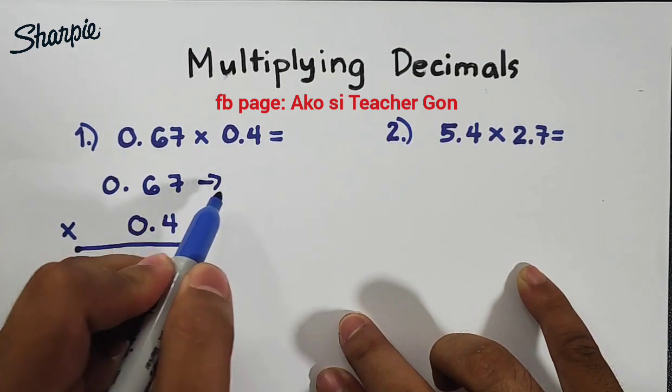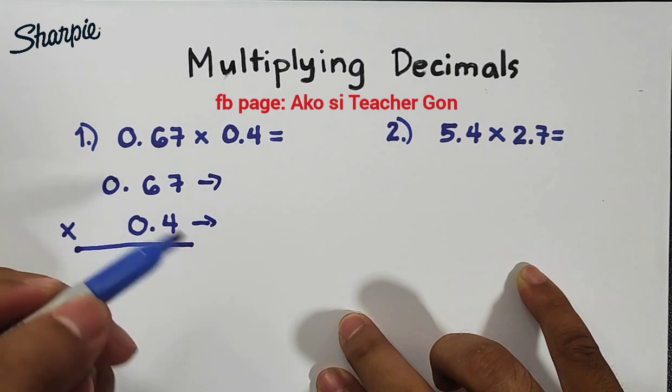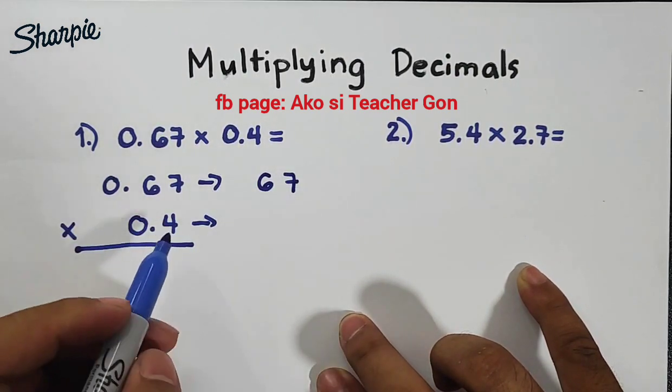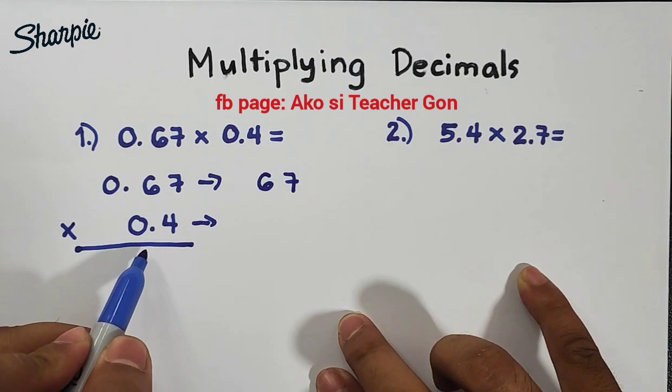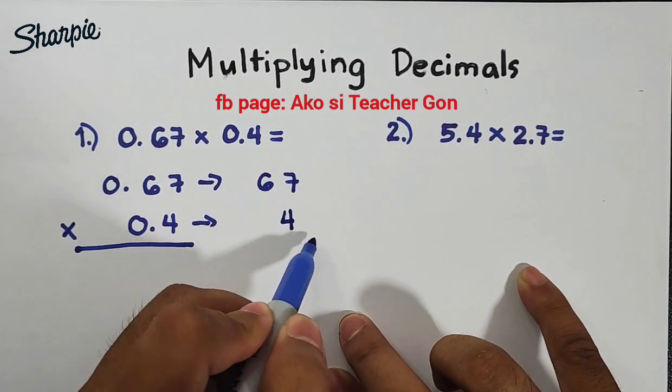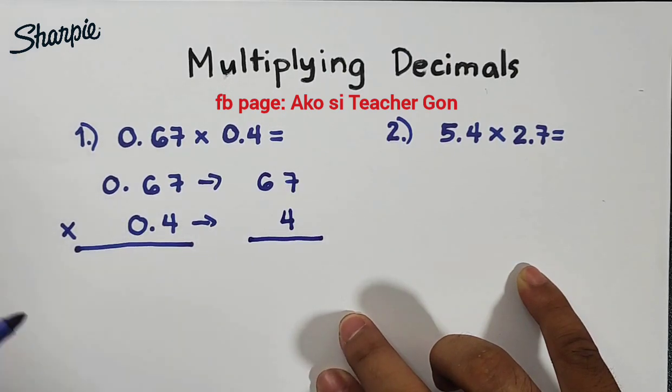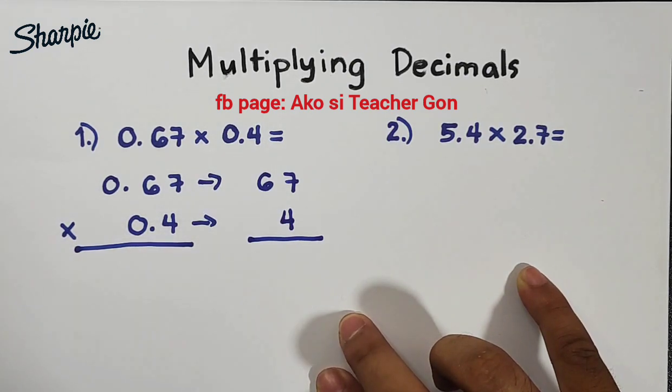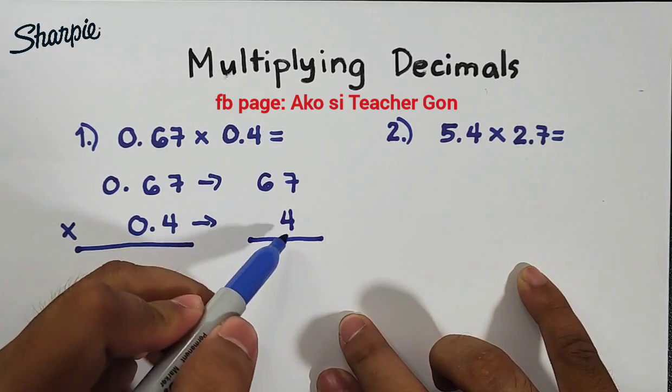So instead of multiplying it directly, I will convert first these decimals into whole numbers. So we have 0.67, we will eliminate the decimal places, it will become 67. And then this 0.4, we will convert this into a whole number and that is 4. Again, this is my technique for today's video, wherein we will multiply these decimals as whole numbers and then later on we will proceed with the final answer.